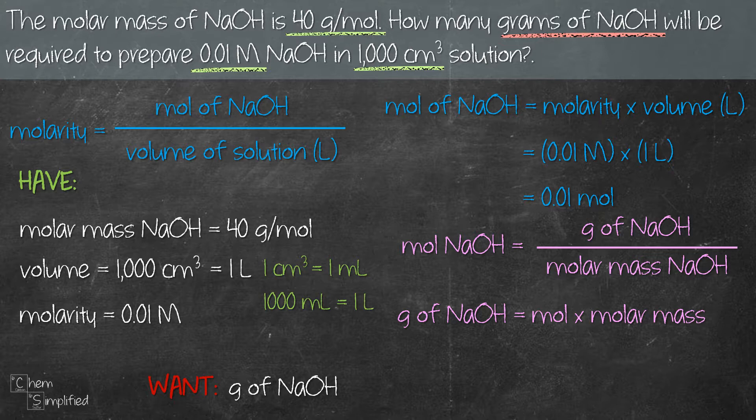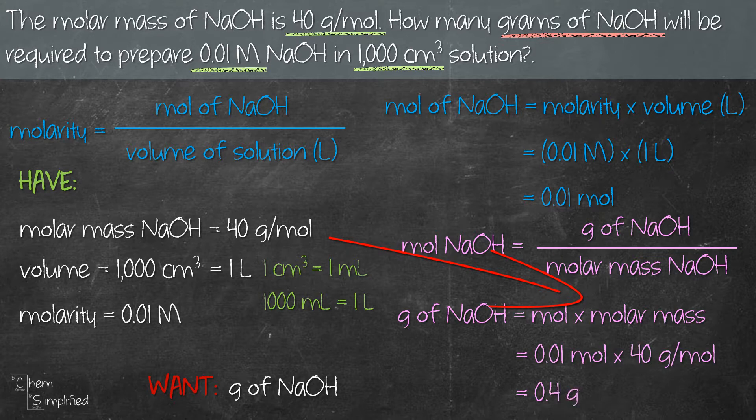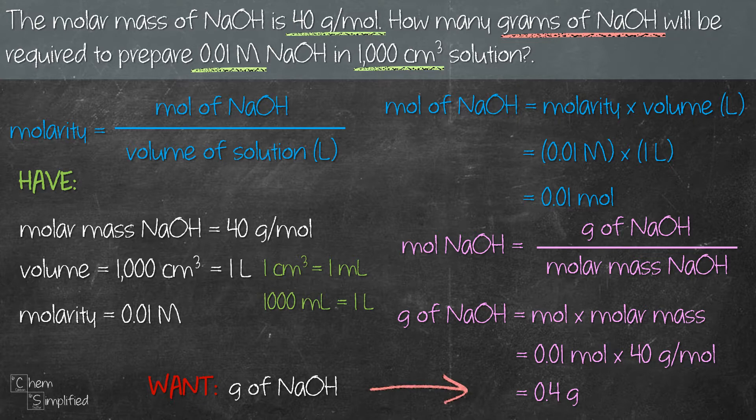What we have to do is take the mole that we've calculated, 0.01 mole, and we multiply it with the molar mass of NaOH. And that's going to give us 0.4 grams. Therefore, the grams of NaOH that's required to prepare 1000 cm³ of 0.01 molar NaOH solution is 0.4 grams.